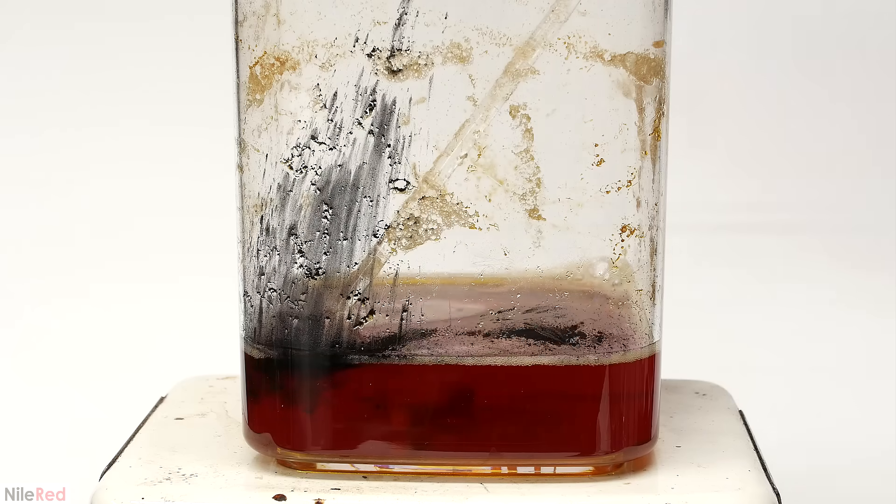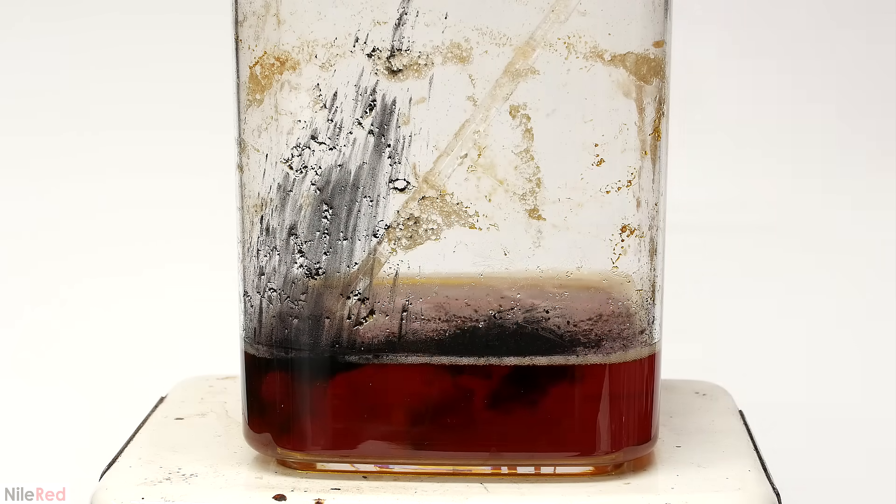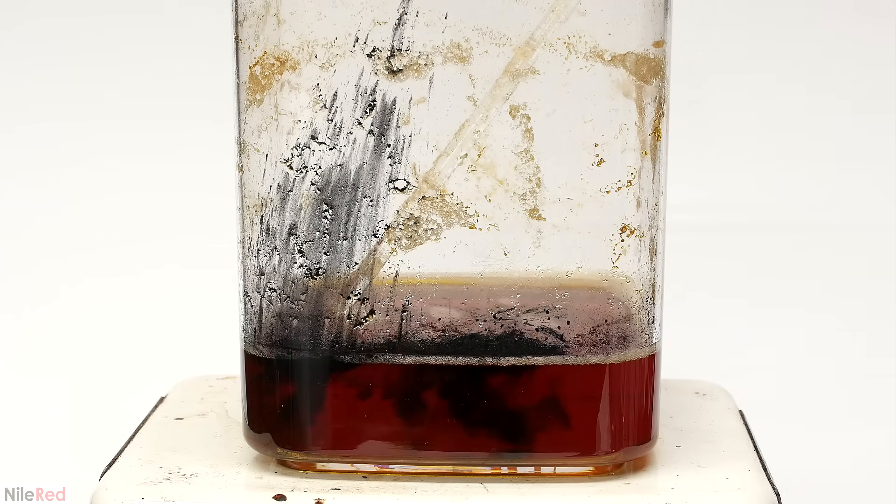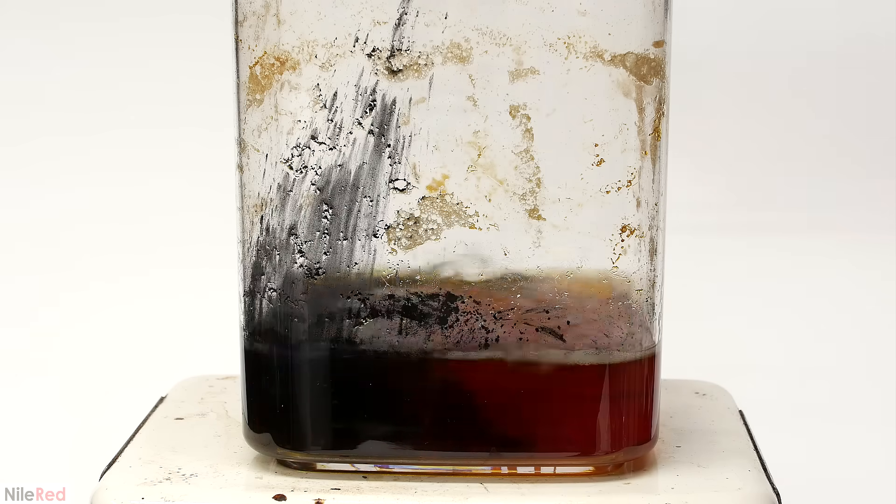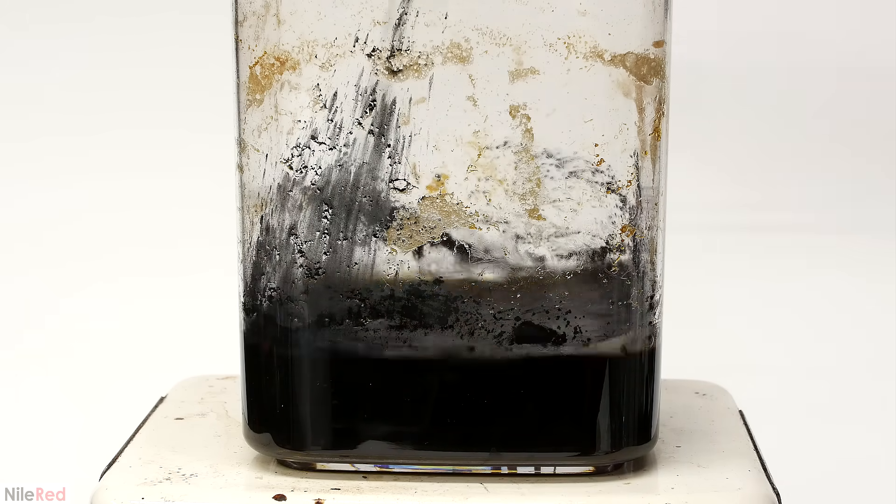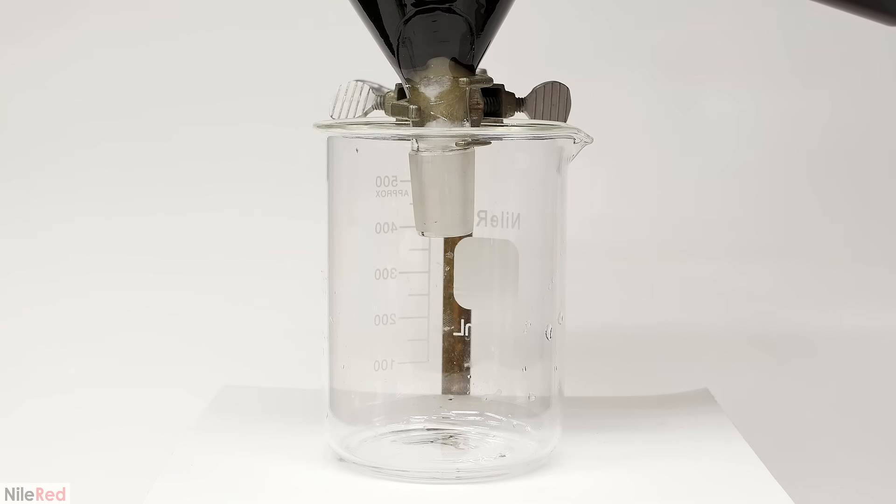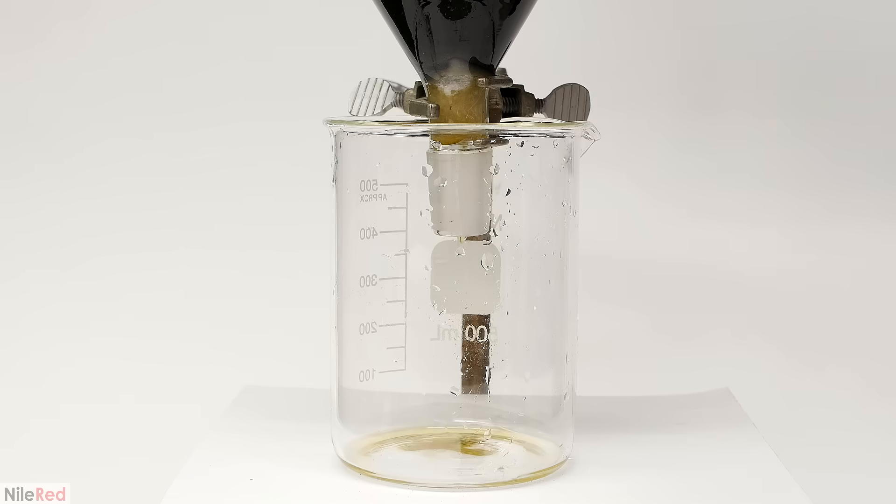The urea that forms quickly dissolves, and I'm eventually left with a nice and clear solution. It's still really discolored though, so I tried seeing if activated charcoal would help. It usually works pretty well, so I mixed in a small amount. Then, to get rid of the charcoal, I filtered it through some cotton and Celite.